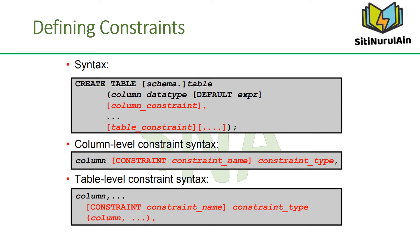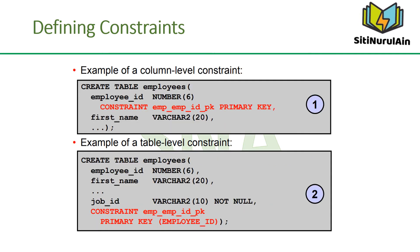You can create constraints at either the column level or table level. Constraints defined at the column level are included when the column is defined. Table-level constraints are defined at the end of the table definition and must refer to the column or columns on which the constraint pertains in parentheses. Functionally, a column-level constraint is the same as a table-level constraint. Constraints are usually created at the same time as the table, but can also be added after its creation and temporarily disabled. Both examples in the slide create a primary key constraint on the EMPLOYEE_ID column of the EMPLOYEES table — the first uses column-level syntax, the second uses table-level syntax.